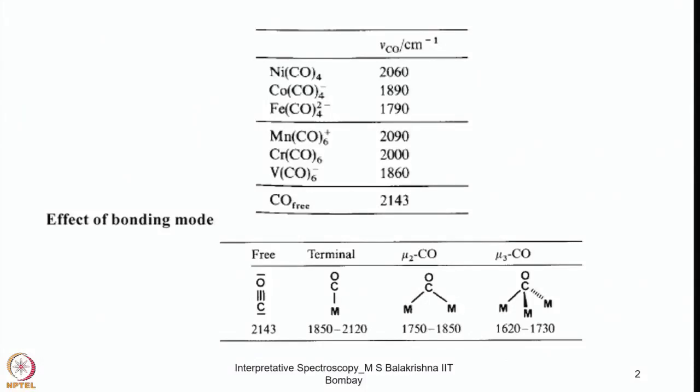Let us continue with some more examples about IR spectra of metal complexes and also let us try to learn more about force constant and its relationship with frequency. Here I have given a list of carbonyls: homoleptic carbonyl complexes, neutral complexes, anionic complexes, and also cationic complexes, and I have given the stretching frequency for CO in centimeter minus 1. Some of those things I already discussed in my previous lecture.